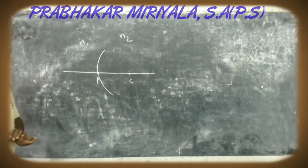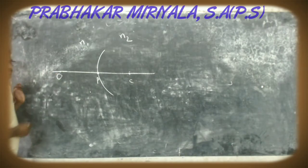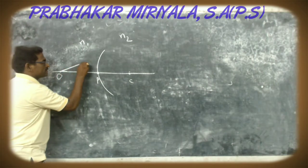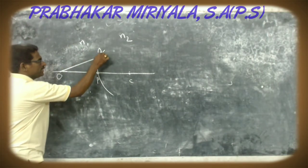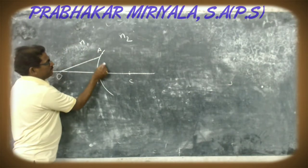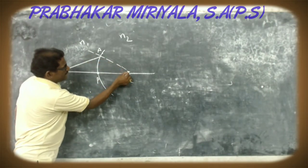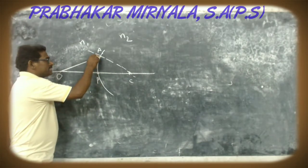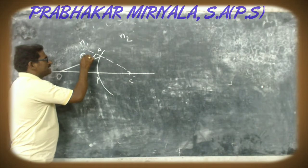Let us consider an object placed at O. A light ray from O is incident on the curved surface at A. A line joining from A to C indicates the normal line, and this is the angle of incidence, which we consider as theta 1.